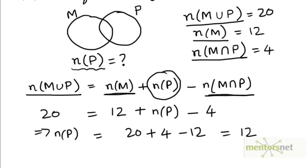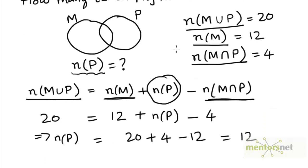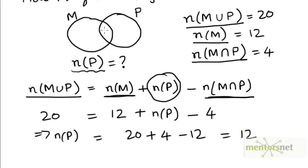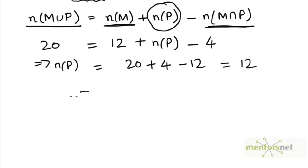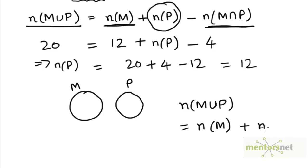By the way, if these two sets had been disjoint, that is, if there had been no teacher teaching both math and physics, then they would have looked like this. And when we have two disjoint sets, we can calculate the number of elements present in both in their union by just adding the number of elements in the individual sets. Because their intersection is the empty set. So the number of elements in their intersection is 0.